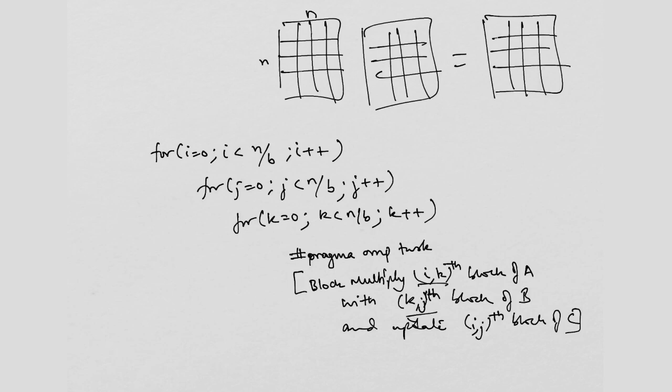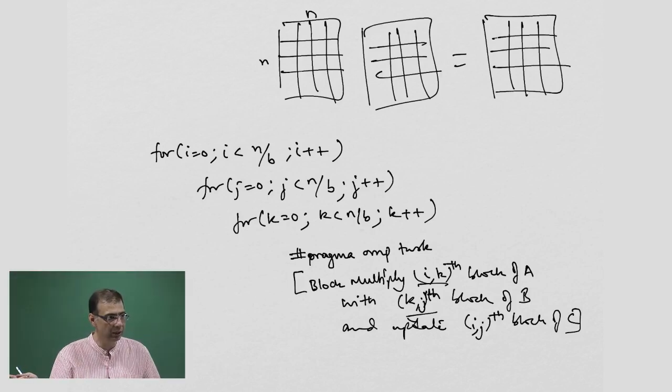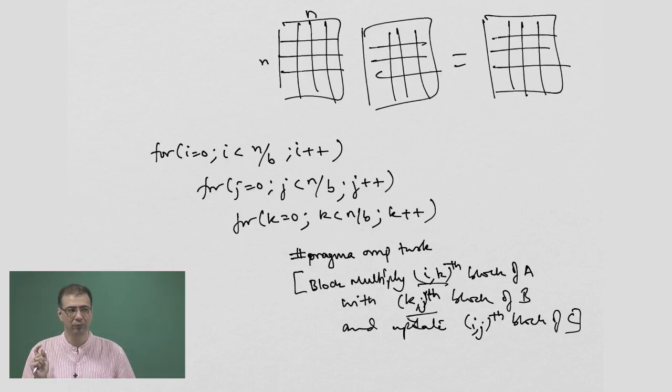This is going to update i j. So if k is 1, this i 1 and 1 j are going to update i j. But for k equal to 2, there is another task i 2 to j, which is also going to update i j. Is this point clear? There are different tasks which are updating the same block in C.